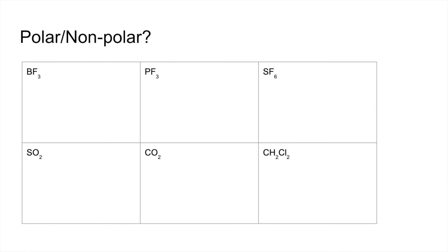We'll finish with six molecules for you to decide whether they're polar or non-polar. Drawing a shape diagram for each one will make it very easy. The BF3 molecule is trigonal planar, so those B-F dipoles operate in those directions and they all cancel out — so BF3 is non-polar.